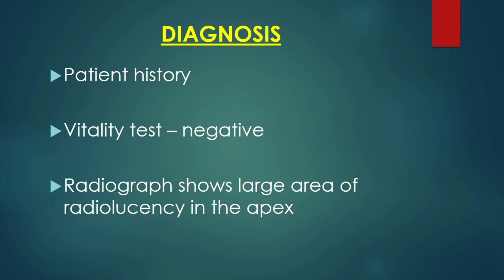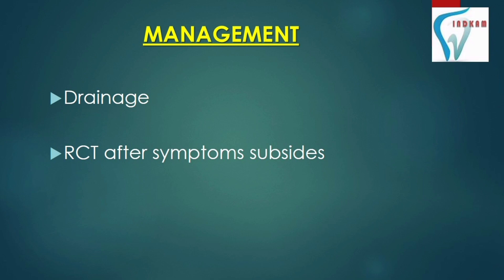Diagnosis is done by patient history. The vitality test is negative, and radiograph shows a large area of radiolucency at the apex. It is managed by draining and root canal treatment after symptoms subside.